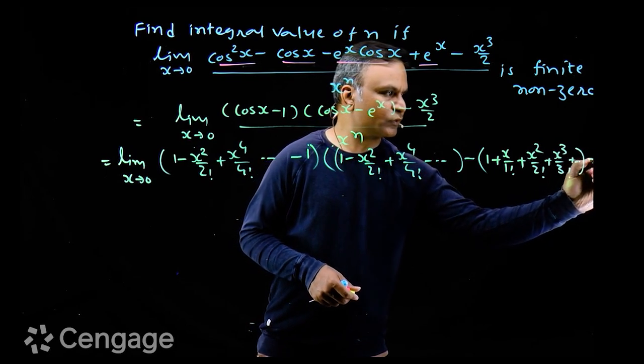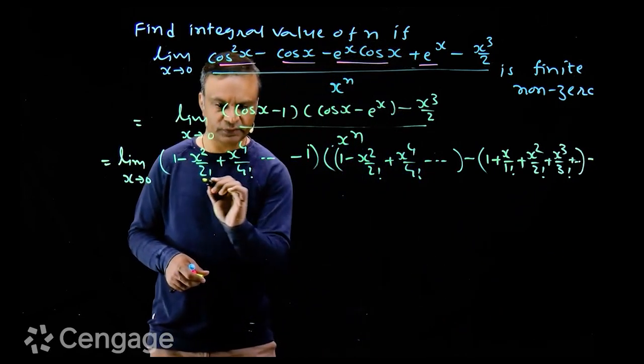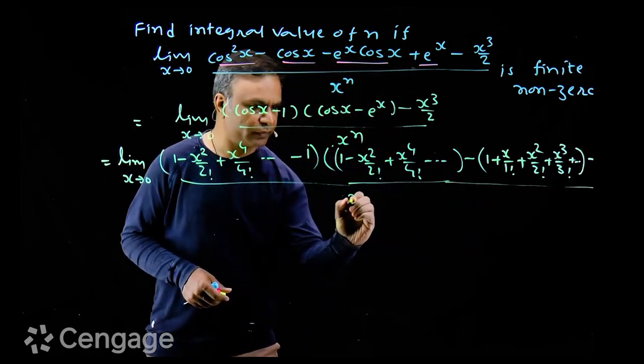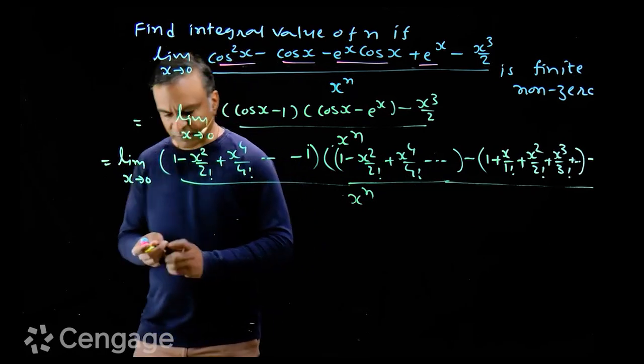Outside bracket we have x cube over 2, this divided by x power n. Let us simplify this.